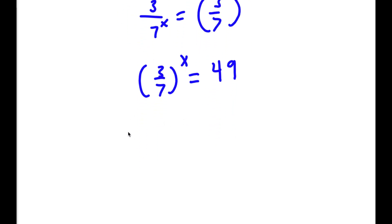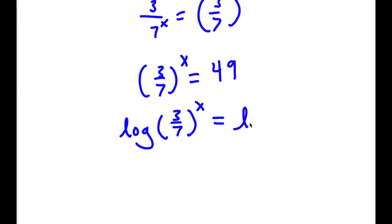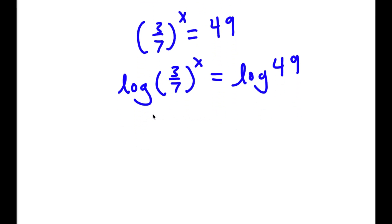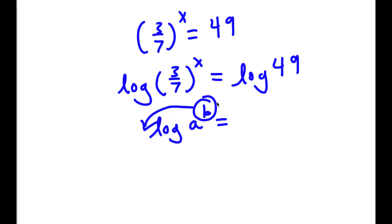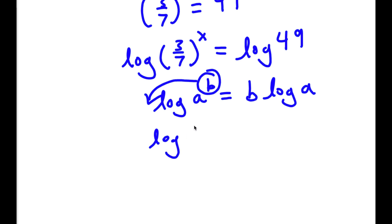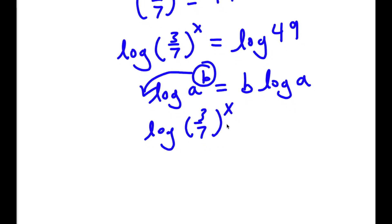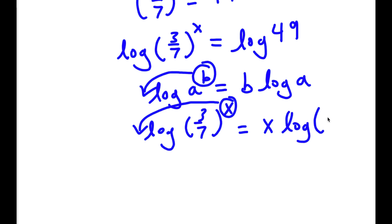Now I can take the log on both sides. So I have log of 3 over 7 to the power of x is equal to log 49. An important property of logarithms is that if I have something in the form log a to the power of b, I can move this exponent b to the front of the logarithm — so this equals b times log a. So for log of 3 over 7 to the power of x, I can move the exponent x to the front.